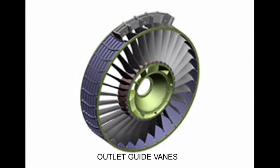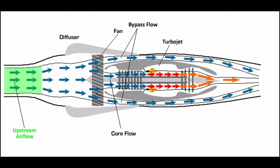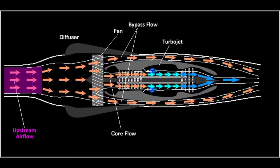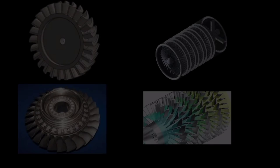The last row of stators is called outlet guide vanes, which remove the rotation of the air so that the air will flow linearly into the diffuser. The diffuser is divergent, which causes air velocity to decrease and air pressure to increase, delivering air to the combustion chamber.